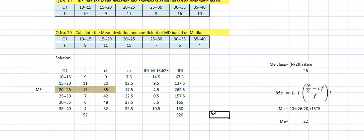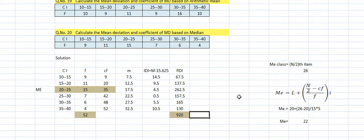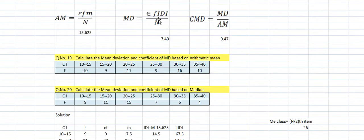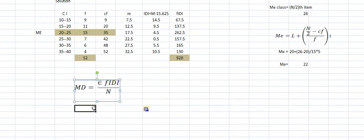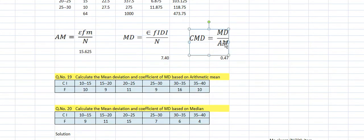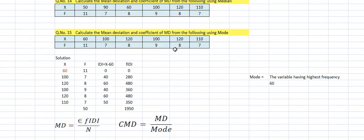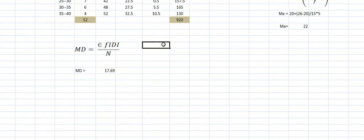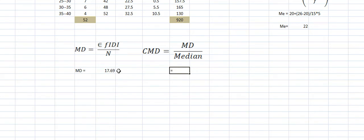The total summation of F|D| is 920. Mean deviation = 920 / 52 = 17.69. Now for the coefficient of mean deviation based on median: coefficient = mean deviation / median = 17.69 / 22.